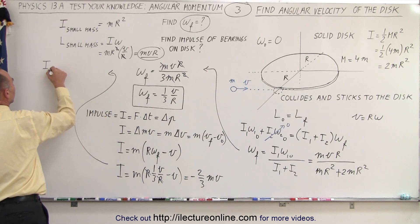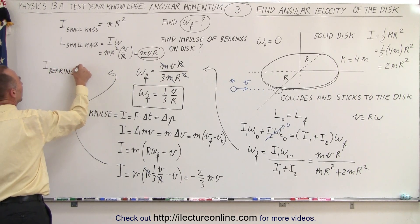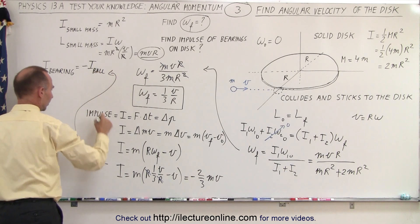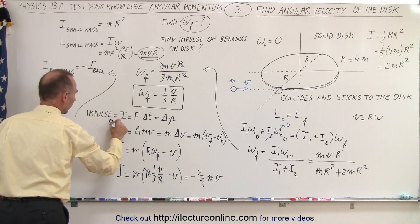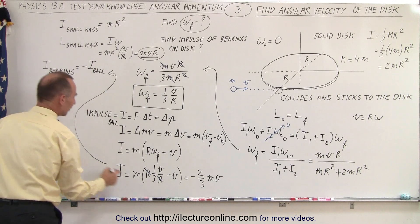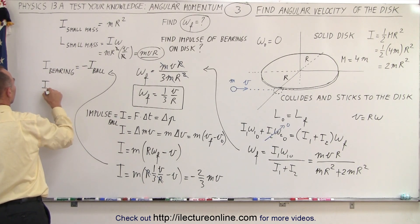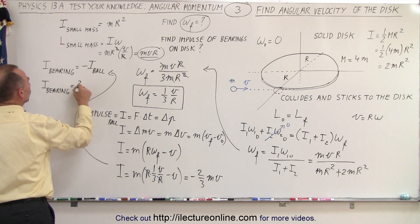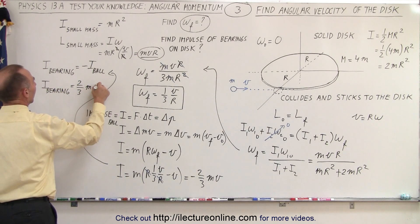Over here, the impulse on the bearing will be equal to the negative impulse on the ball, which we just found, because that's the impulse on the ball. So therefore it will be the negative of that. So that means the impulse on the bearing will be equal to positive two-thirds m times v.